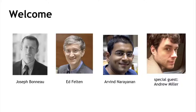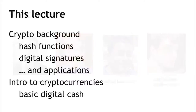In this lecture, number one, we're going to do two things. First, we'll introduce some cryptographic primitives that turn out to be necessary for talking about cryptocurrencies — in particular, cryptographic hashes and digital signatures — and we'll talk about some of the ways those are used to build cryptocurrencies. Then at the end of the lecture, we'll start talking about cryptocurrencies and I'll give some examples of simple cryptocurrencies that illustrate some of the design challenges we need to deal with.